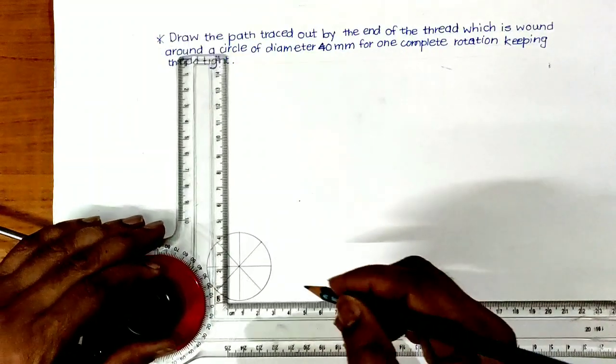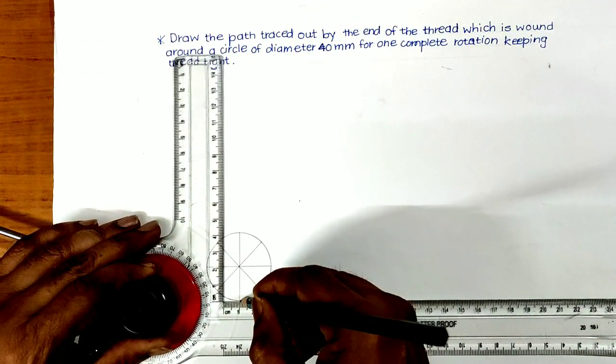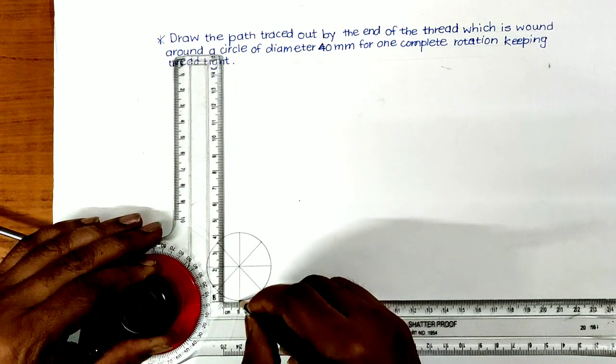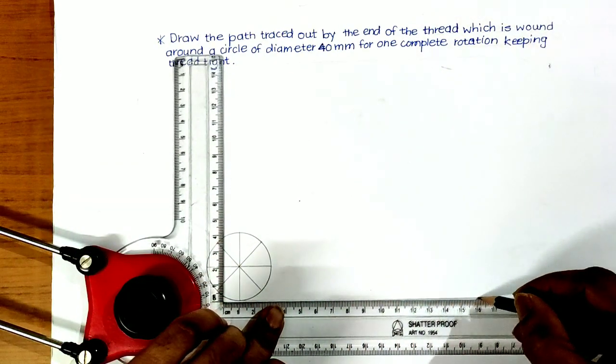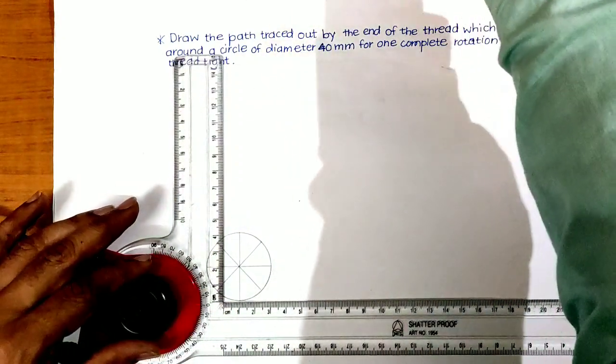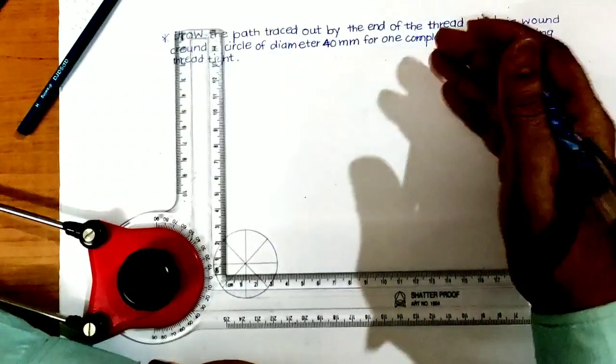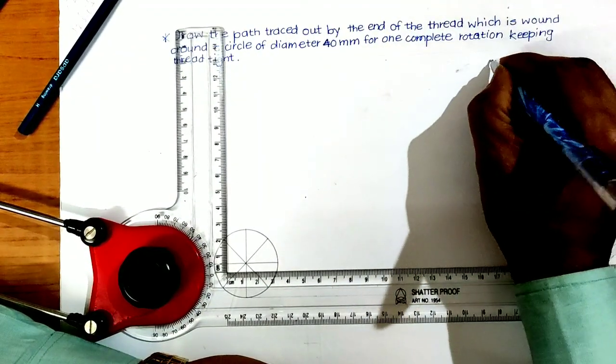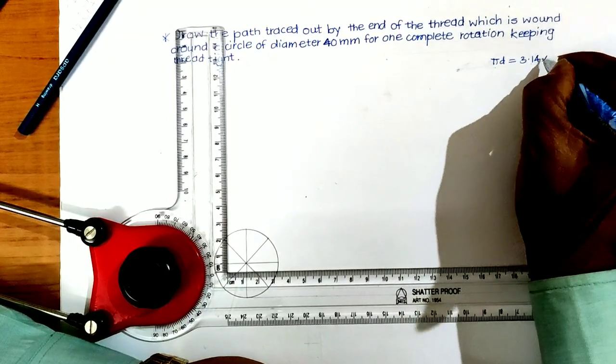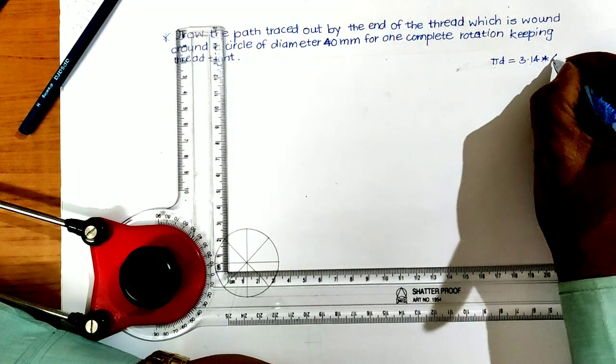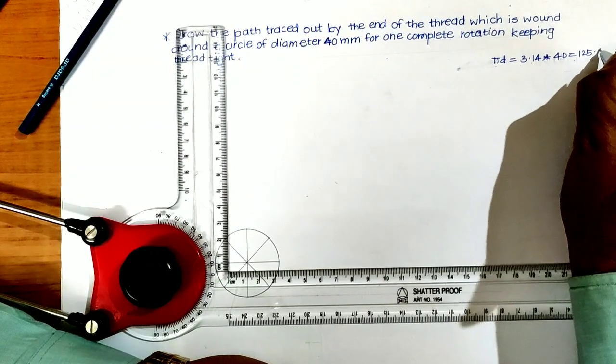Now take this horizontal line length equal to πd for given diameter. This total length of the thread is equal to π times d, that is 3.14 times diameter given is 40 mm, equals 125.6 mm.